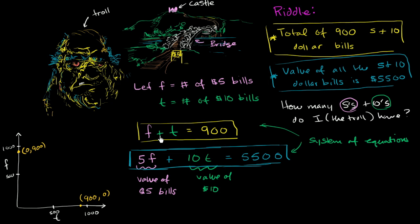So all the combinations of f's and t's that satisfy this are going to be on this line, on that line right over there. I just draw a dotted line just because it's easier for me to draw it straight. So that represents all the f's and t's that satisfy the first constraint. Obviously, there's a bunch of them, so we don't know which is the one that the troll actually has. But lucky for us, we have a second constraint.